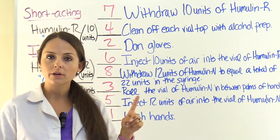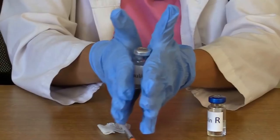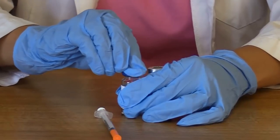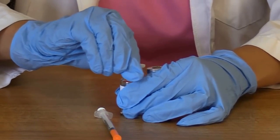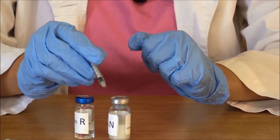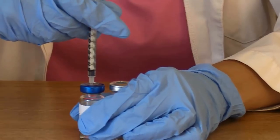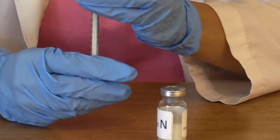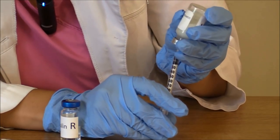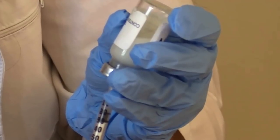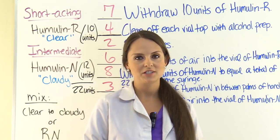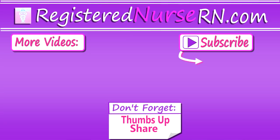To recap: first wash hands and put on gloves; then roll the vial of Humulin N in between the palms of your hands; clean off each vial top with alcohol prep; inject 12 units of air into the Humulin N vial; inject 10 units of air into the Humulin R vial; withdraw 10 units of Humulin R; then withdraw 12 units of Humulin N to equal a total dose of 22 units in the syringe. That wraps up this video — be sure to check out our other questions, quizzes, and NCLEX review lectures.